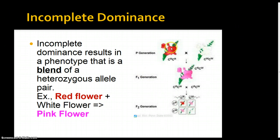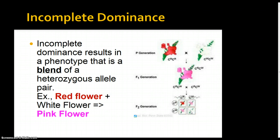If we have a red flower and a white flower, and those two produce offspring, their flowers can be pink. The heterozygous form produces a different phenotype — a mix between the two parents produces a different phenotype, so we get a pink flower. If we were to cross two heterozygotes, we end up with one red flower, two pink flowers, and one white flower. The two pink flowers are heterozygous and have a different phenotype than the homozygous dominant or homozygous recessive. That's incomplete dominance — we get a blend or a mix of the two.